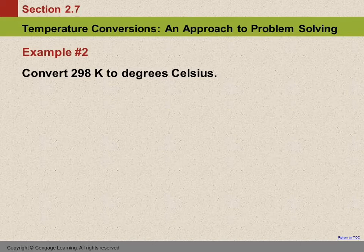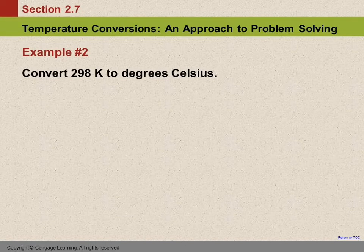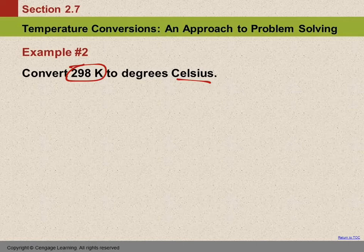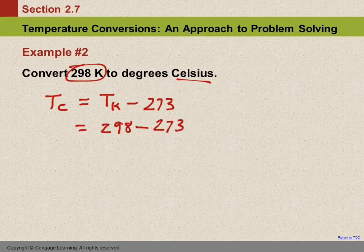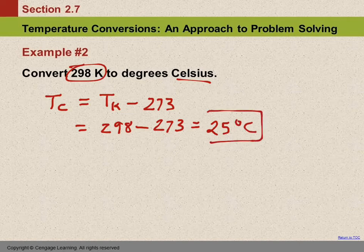Next example: convert 298 Kelvin to degrees Celsius. We're given Kelvin and asked for Celsius, so we look up the equation: Celsius temperature equals Kelvin temperature minus 273. We take 298 and subtract 273, getting 25 degrees Celsius. The initial number had uncertainty in the ones place, and our answer will also have uncertainty in the ones place.